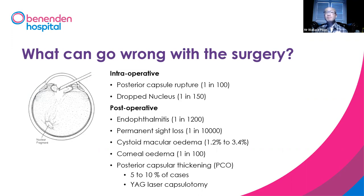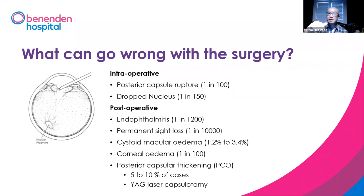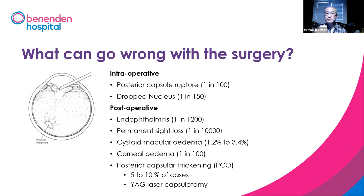Post-operatively, the most devastating complication is what we call endophthalmitis. It happens very rarely — one in 1,200 cases. It happens because when we do the surgery we have to cut the eye open, so there's a chance that bacteria can get inside the eye during surgery. But most commonly this actually happens following the operation, when the patient thinks they're all right, starts rubbing the eye, getting dirty water into the eye before the wound is sealed, and that causes infection. If that happens, we can still treat it, but the outcome might not be as favourable. Very rarely, one in 10,000 patients can go blind or lose the eye because of the infection.